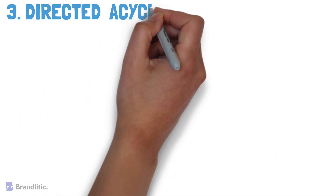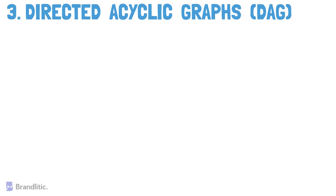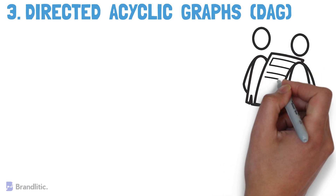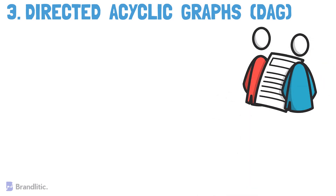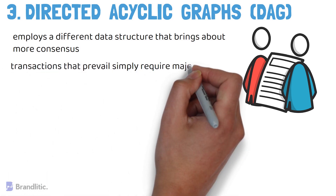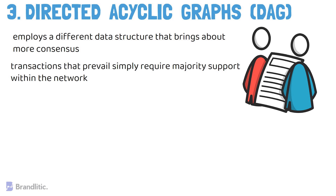Number three: directed acyclic graphs, or DAG. Hashgraph is not the only effort to correct blockchain's limitations — developers are also focusing on the data structure of DLT networks. DAG employs a different data structure that brings more consensus into the system. Specifically, DAG is a type of DLT that relies on a consensus algorithm where a transaction prevails simply by requiring majority support within the network.